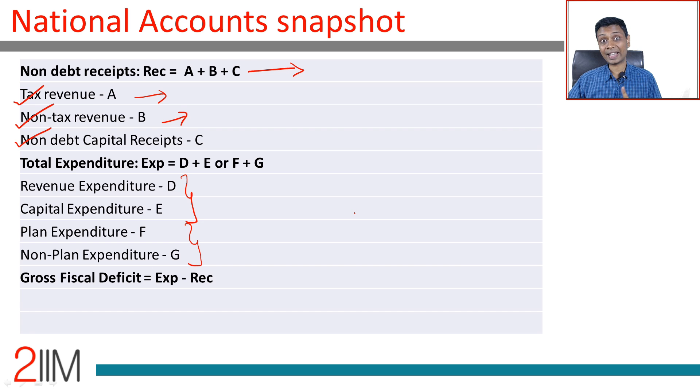Non-debt capital receipts - think about what this could be. Capital receipt happens when you sell or buy something. Where does the government sell and make money? This is effectively privatization, divesting its stake in PSUs. Government owns something, it sells 10% of that and makes money on that. These are the receipts.